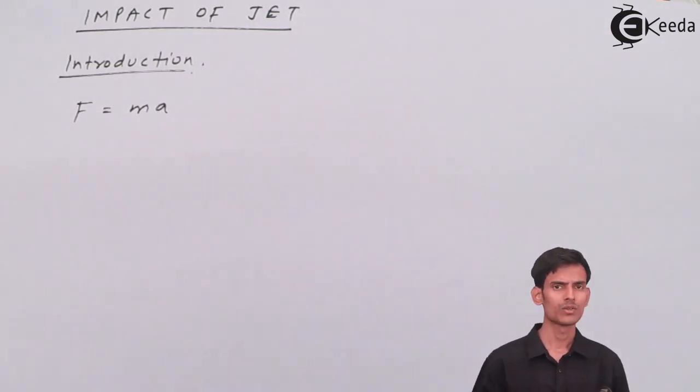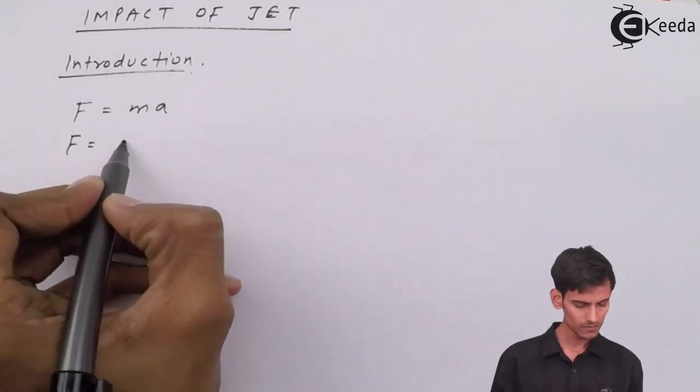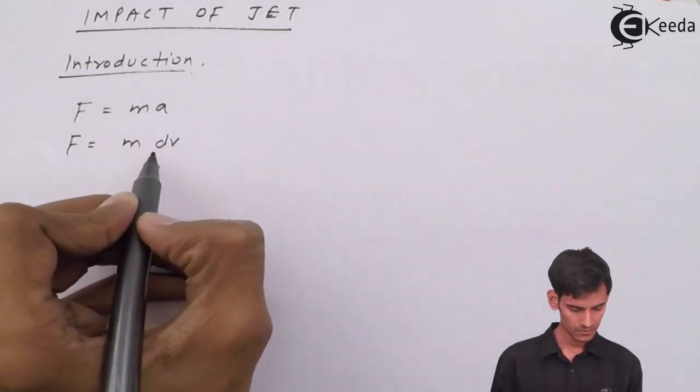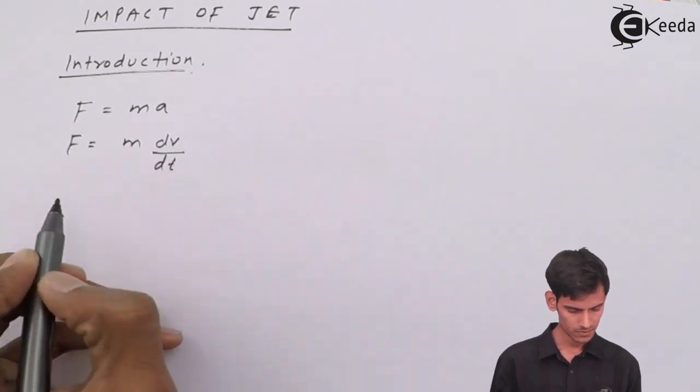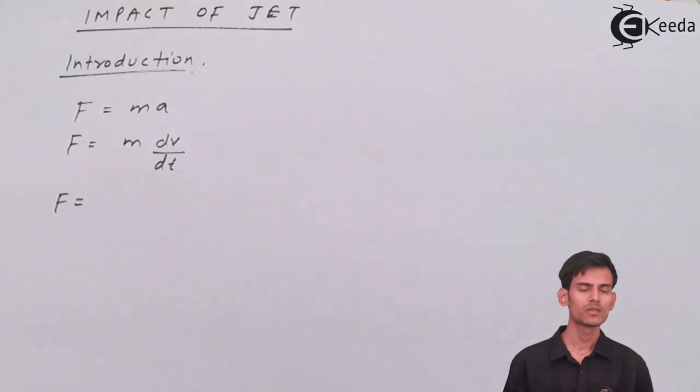So we all know F is equal to ma is Newton's second law of motion. Now you can write a as dv by dt which is acceleration, is nothing but dv by dt.